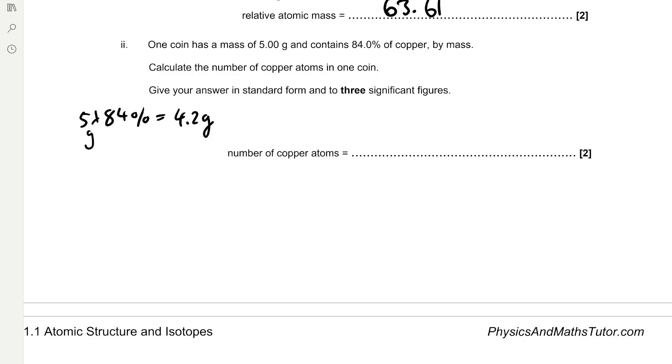And then to find the number of moles of copper in 4.2 grams we have to do the mass divided by the Mr. So that's 4.2 divided by 63.5 grams per mole, which gives us 0.0661 moles.